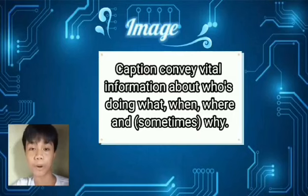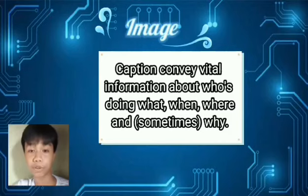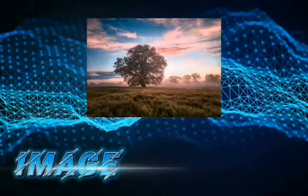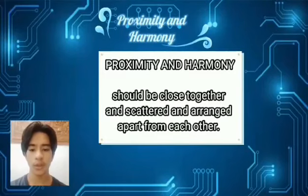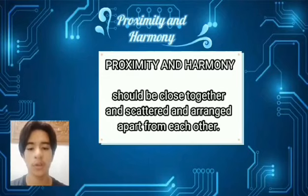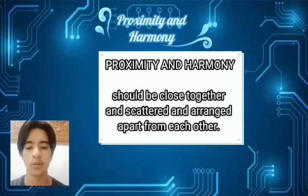D, with appropriate caption — captions convey vital information about who's doing what, when, where, and sometimes why. Solid captions paired with interesting photographs can spark a reader's interest in a full text story. Without captions, people draw their own conclusions about the photo. Proximity and harmony: the elements should be close together and arranged apart from each other. The elements should not be cluttered and should not compete with each other.